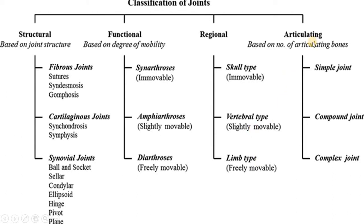In articulating classification, we classify based on how many bones are articulating. There are simple joints, compound joints, and complex joints. We will now focus on structural classification, but to summarize: functional classification gives us immovable, slightly movable, and freely movable; regional classification gives skull, vertebral, and limb types; and articulating classification gives simple, compound, and complex joints.